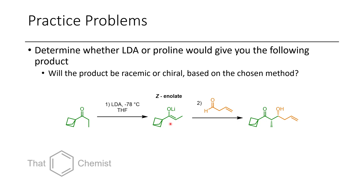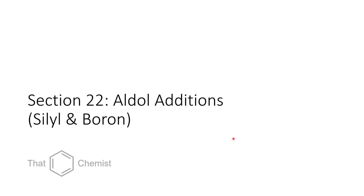Some of the chemistry we're going to talk about today with boron aldol reactions actually lets you access the same products, but if you choose a chiral boron-containing compound, you can get one enantiomer of your product. So let's get into today's material: aldol additions of silyl and boron enolates.